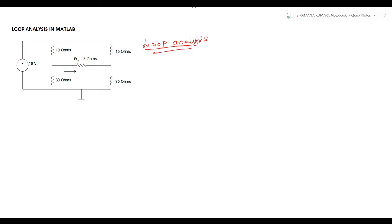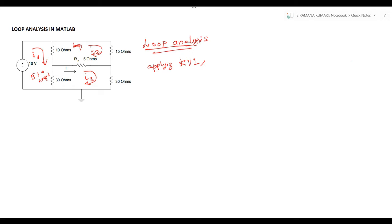Doing the loop analysis, we have to find how many loops are there in the simple circuit. We identified 3 simple loops here. The first current loop is i1, the second one is i2, and the third one is i3. We have to apply Kirchhoff's voltage law to each and every loop. In the previous video we did node analysis and applied KCL.